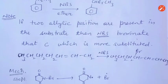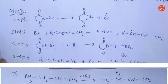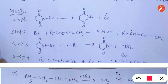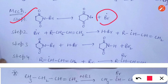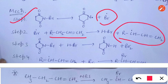The mechanism has four steps. In the first step, there is homolytic bond cleavage between nitrogen and bromine, resulting in the formation of bromine radicals. In the second step, the bromine radicals formed in step one react with the allylic system, forming a new radical called the allylic radical.